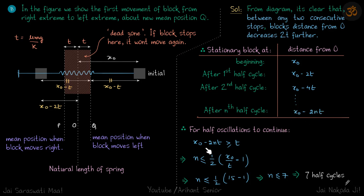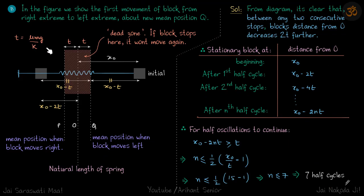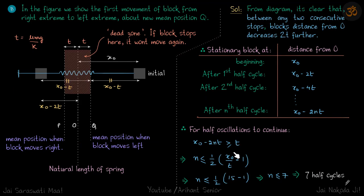So the condition is x naught minus 2nt ≥ t, giving n less than or equal to half of (x naught / t) minus 1. With x naught equal to 3 and t equal to μmg/k, substituting the given values gives x naught / t equal to 15. Therefore n must be less than or equal to 7, meaning the block completes 7 half cycles before stopping.